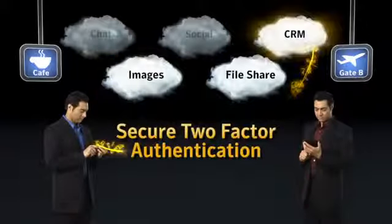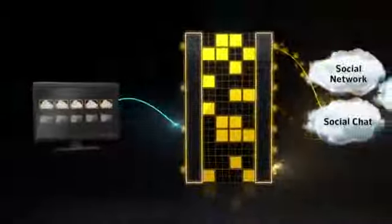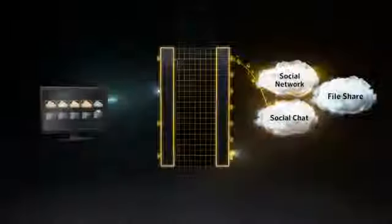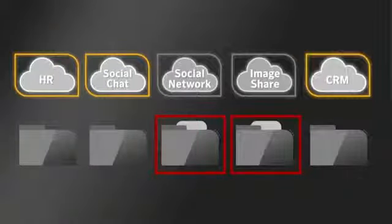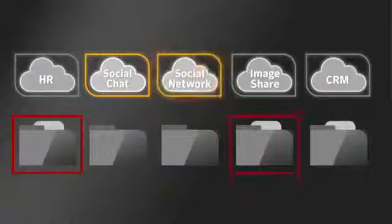Symantec O3 doesn't stop at just managing access to cloud applications — it actually protects the information my users are putting in there. It does this two ways. First, Symantec can encrypt the information going through the gateway and into the cloud. I can choose to encrypt everything, or use Symantec's on-demand encryption to determine which data needs to be encrypted. Second, I can actually block certain data and files that should not be going into the cloud.